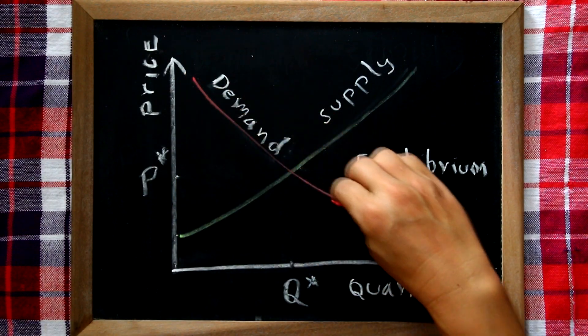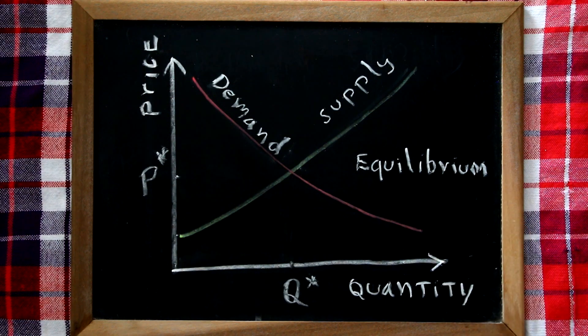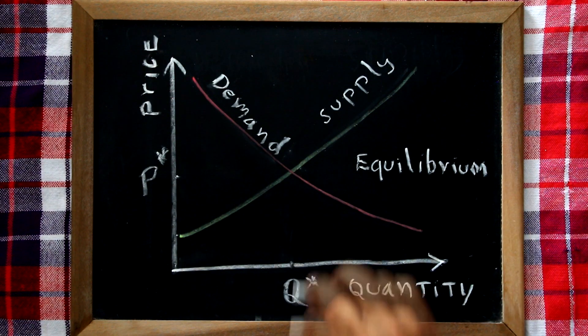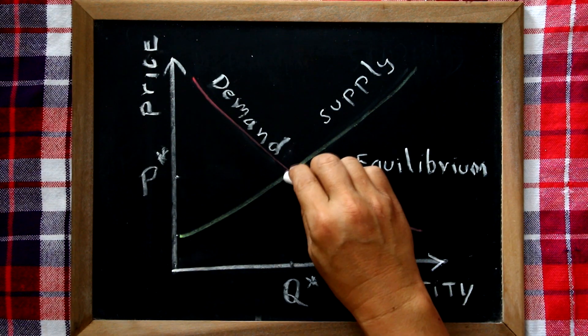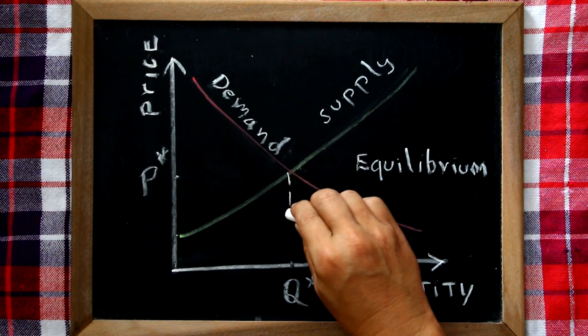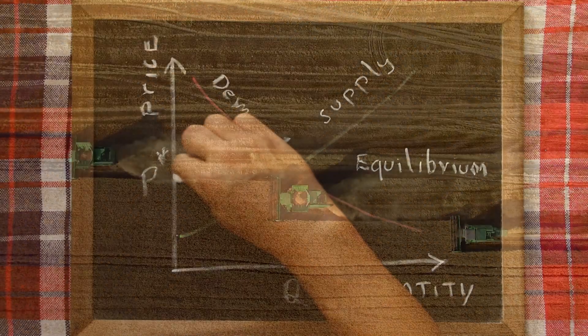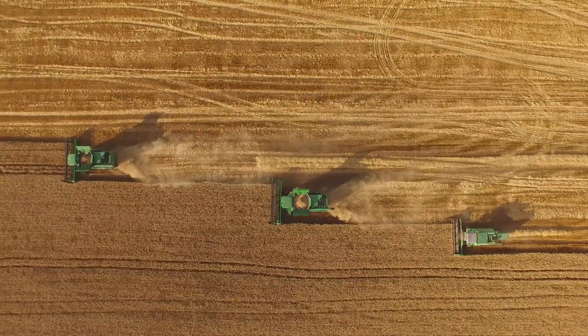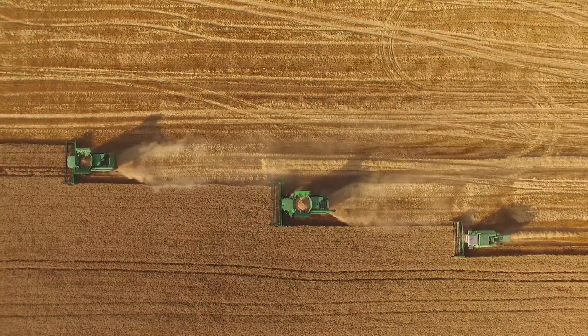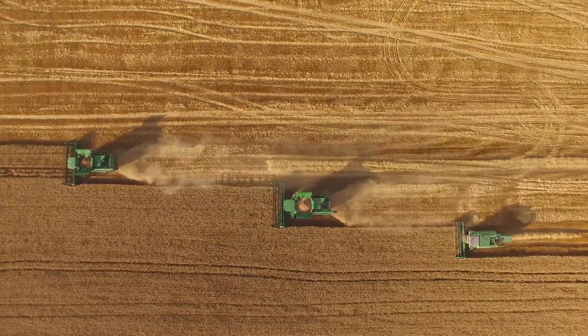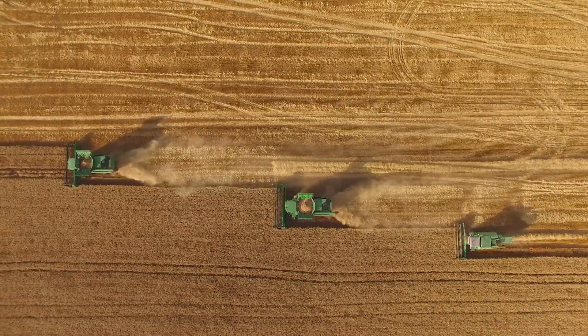Agricultural commodity price determination is based on the intersection of supply and demand. The supply is determined by the amount of production of a commodity.